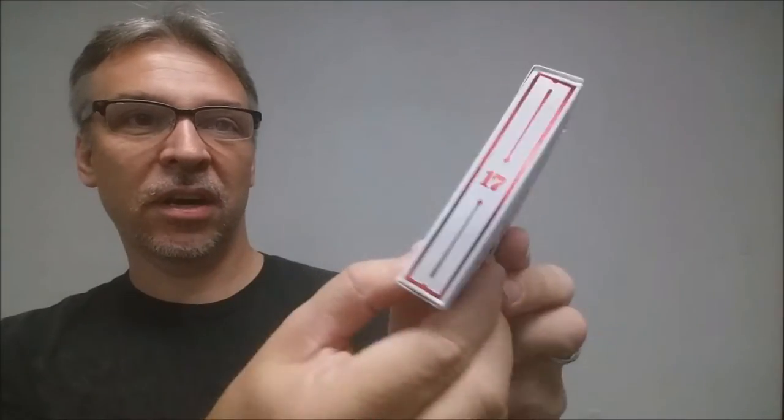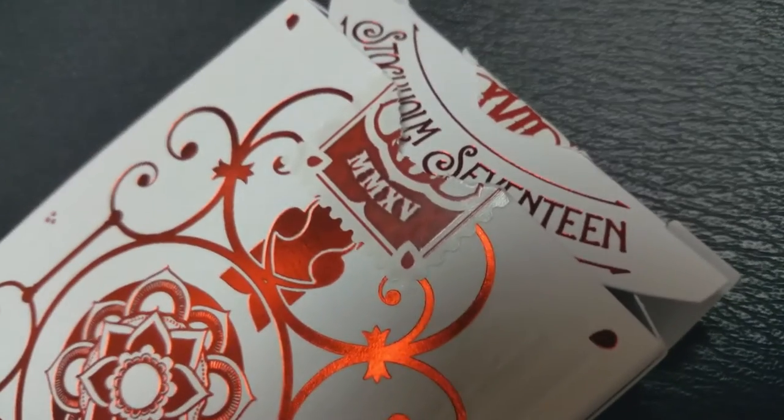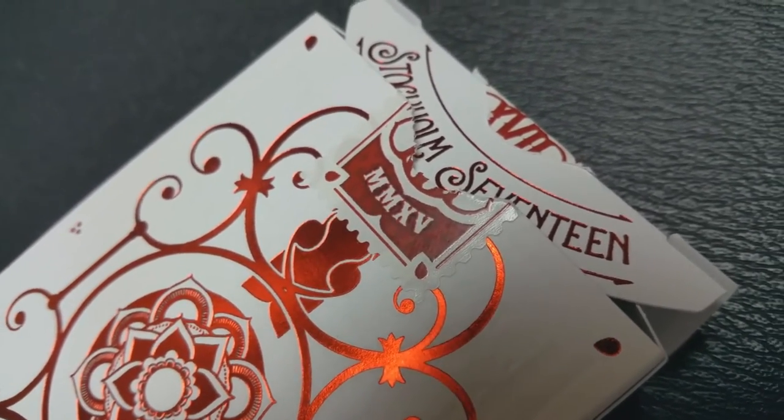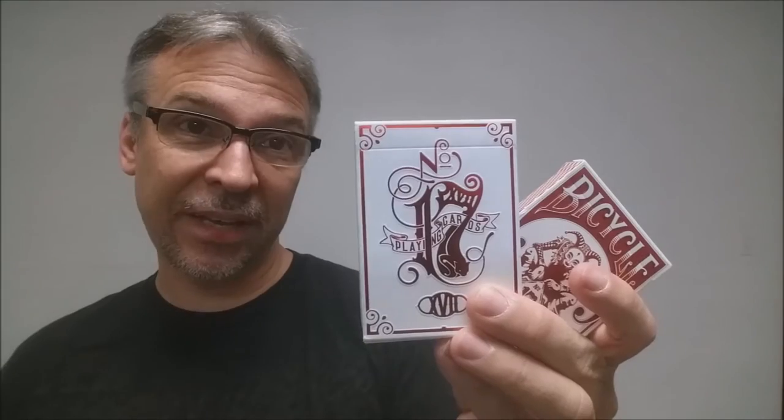The unbranded tuck case is all done in red foil. It says number 17 playing cards and number 17 there on the sides. The back design is kind of an outline or a popped relief of the back design of the cards. And again, you're going to have an original tuck seal, but overall a very simplistic design. Both of these tuck cases have embellishments, embossings on the front and the back. And that is pretty much it for the tuck cases.